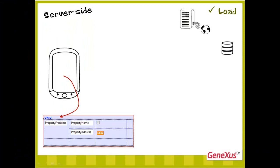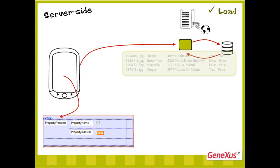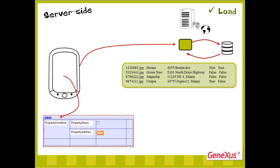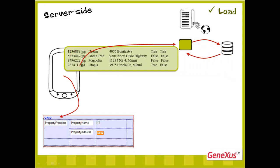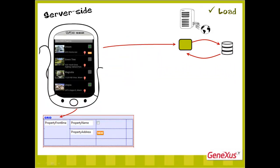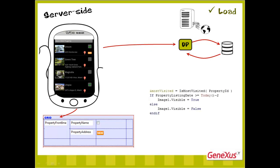In conclusion, when we have a grid with attributes on a screen, what we're implicitly saying is that the table of the database corresponding to those attributes, and occasionally its extended table, must be accessed. Of all records fulfilling the conditions, a collection with the requested values is returned to the device. A data provider REST, implicitly created and generated by GeneXus transparently, is in charge of recovering the data and sending it to the device. This data provider executes the code of the load event for each record in the table recovered, loading for each real estate property the true or false values of the most visited variable and the visible property of the image control.